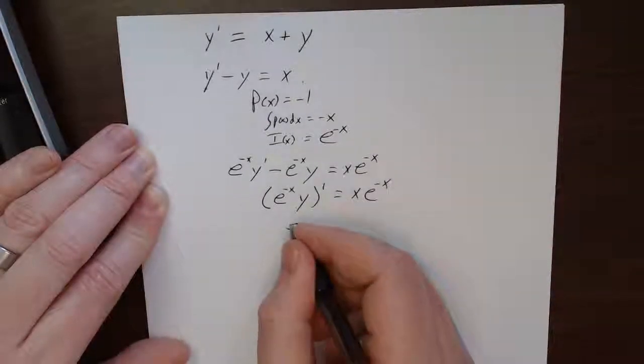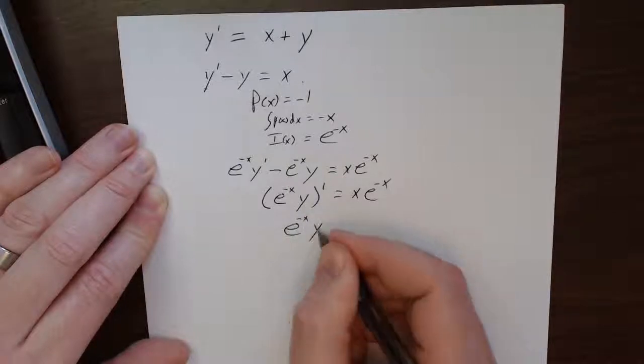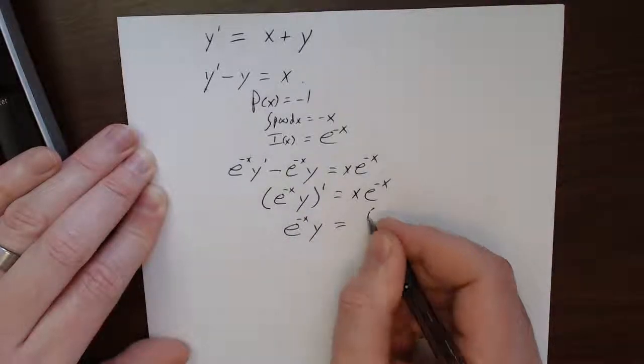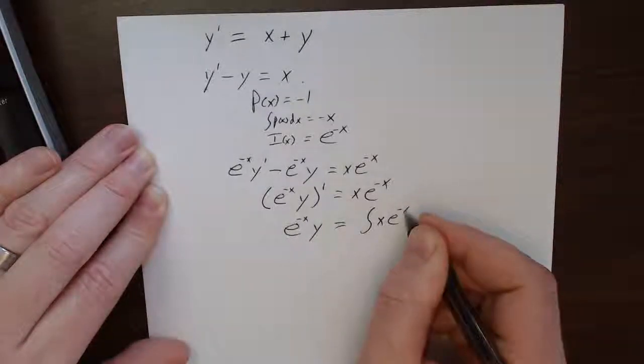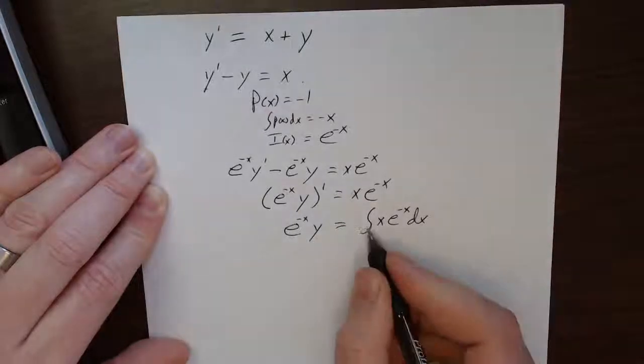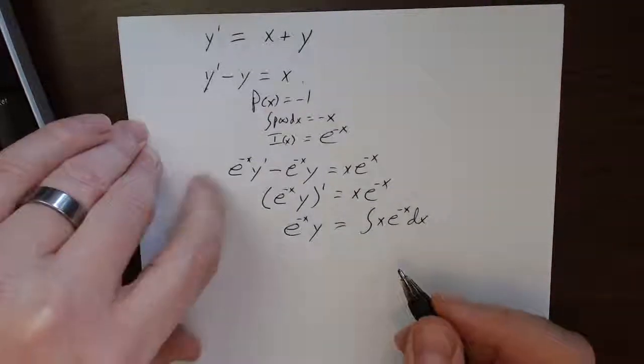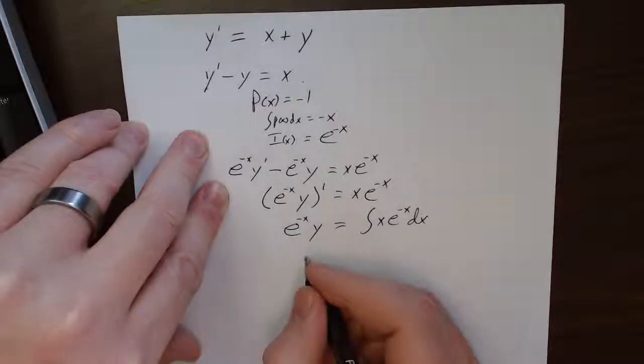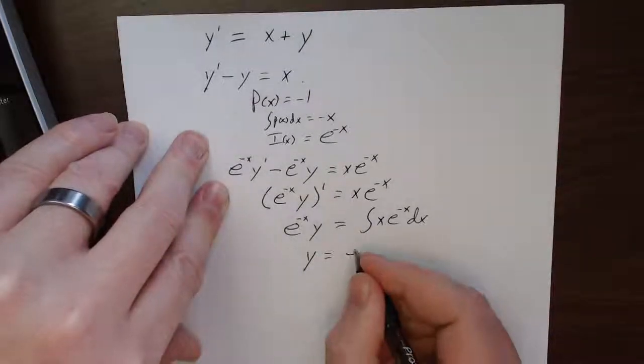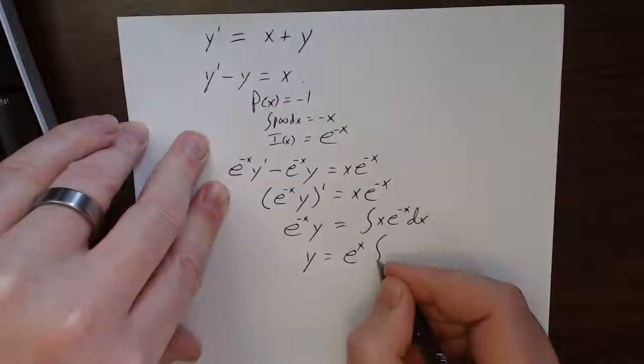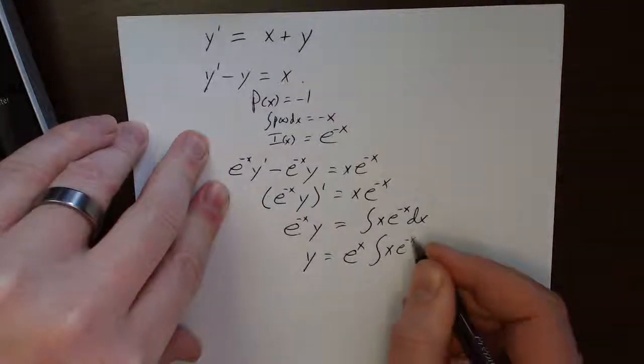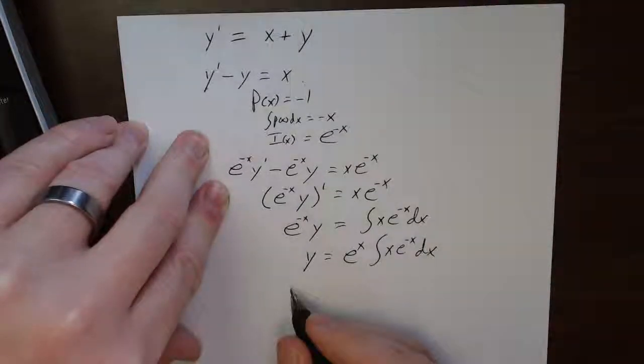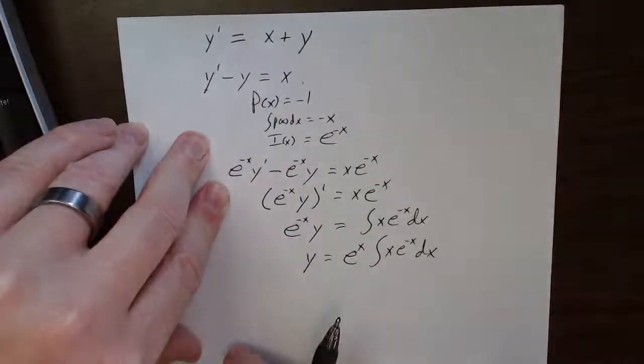Integrate both sides, e to the minus x, y, equals integral x, e to the minus x, dx. I'll let you figure out what that is. And then I will multiply by e to the x. And so, I get y is equal to e to the x, integral x, e to the minus x, dx. And that would be our general family of solutions.